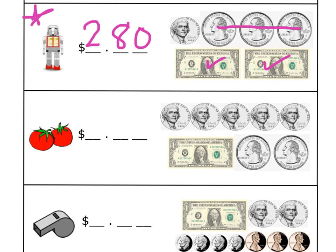Next up are the tomatoes. Count up the coins and the dollar bill and write the money amount. Did you come up with one dollar and seventy-five cents? Here's one dollar, here's fifty cents, then sixty, seventy, and five more — seventy-five.